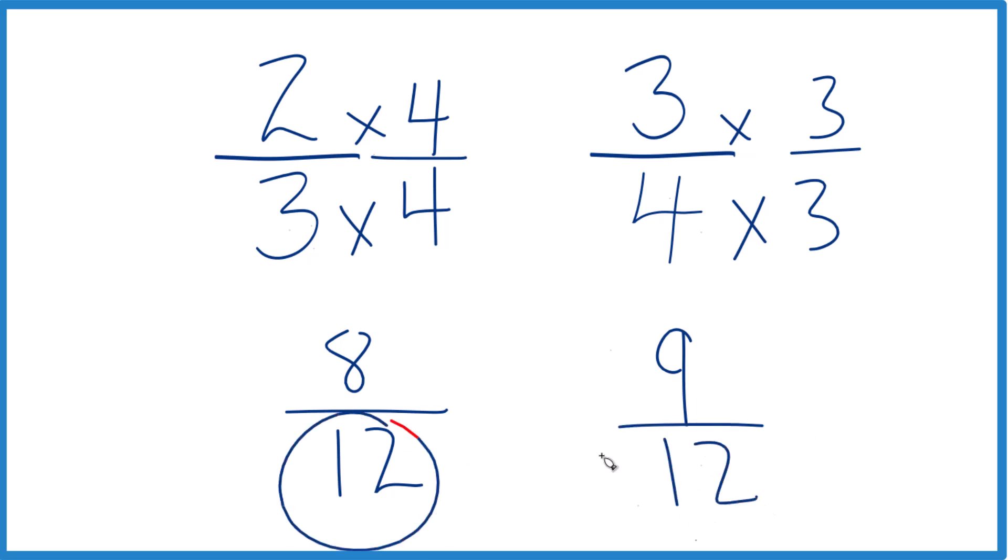And since the denominator is the same, we compare the numerators. Nine is greater than eight, so nine-twelfths is greater than eight-twelfths, and three-fourths, that's greater than two-thirds of a cup. Only by one-twelfth of a cup, but it's still greater.